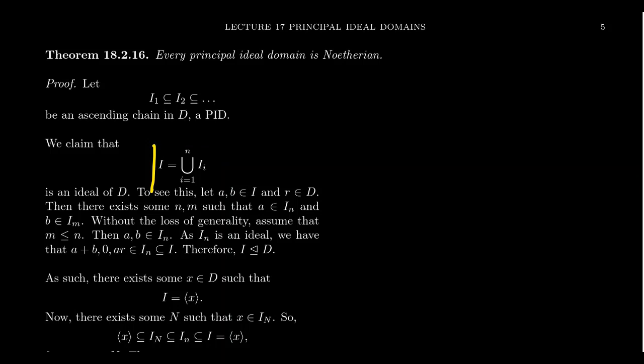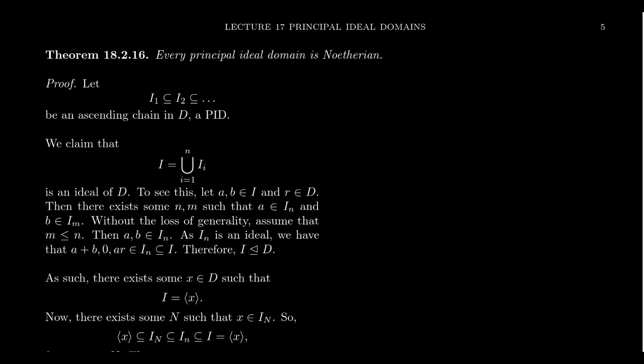So what do we have to show to show that this is an ideal? We'd have to show something like it contains the zero element. Well, each and every one of the ideals in the chain contains the zero element, so in particular I1 has it, so the union will have it — it has the zero element. Is it closed under addition? Suppose we have two elements A and B which belong to the ideal. Well, A has to show up somewhere — if A is inside of I, that means one of the ideals, we'll call it I_N, contained A.